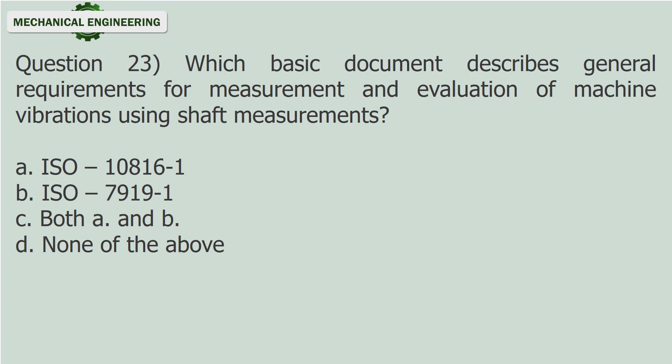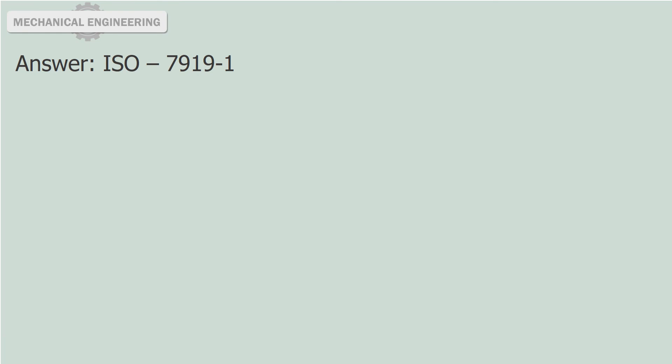Question 23: Which basic document describes general requirements for measurement and evaluation of machine vibrations using shaft measurements? a. ISO 10816-1. b. ISO 7919-1. c. Both a and b. d. None of the above. Answer: ISO 7919-1.